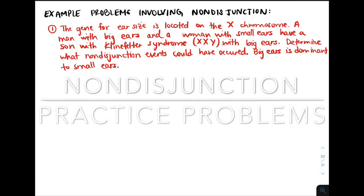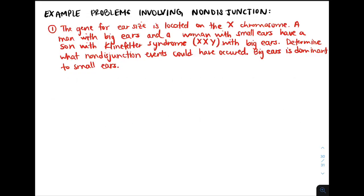Let's do an example problem involving non-disjunction. This problem states that the gene for ear size is located on the X chromosome. A man with big ears and a woman with small ears have a son with Klinefelter syndrome with the genotype XXY who has big ears. Determine what non-disjunction events could have occurred. Big ears is dominant to small ears.